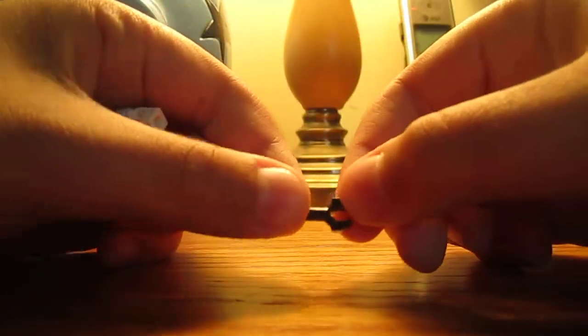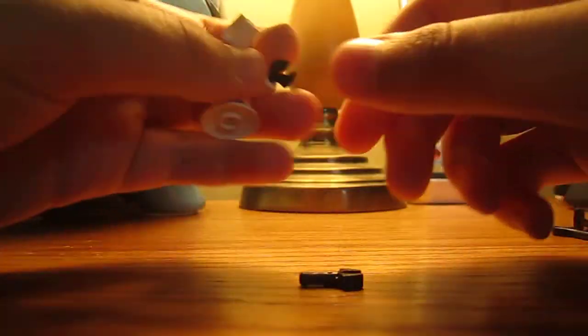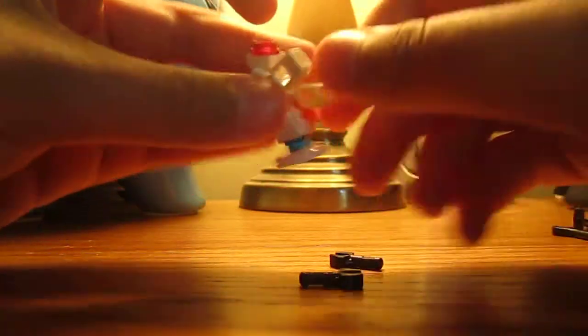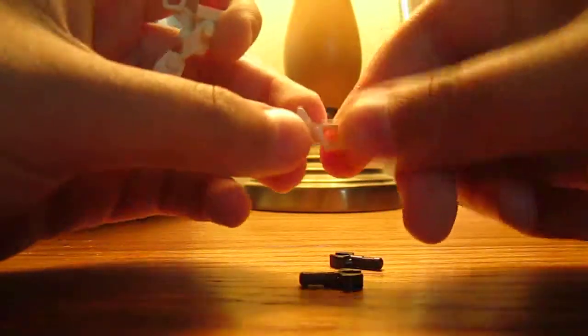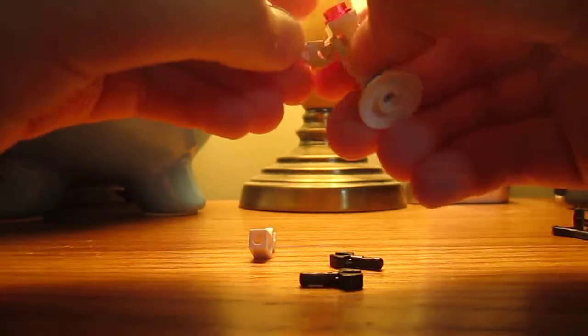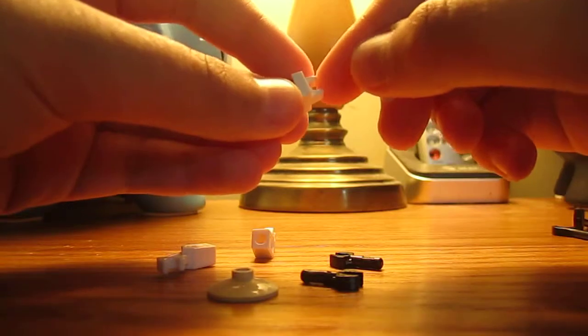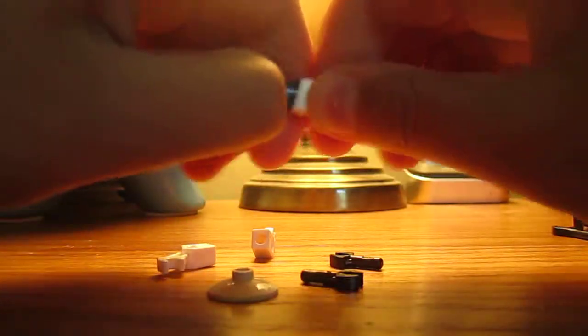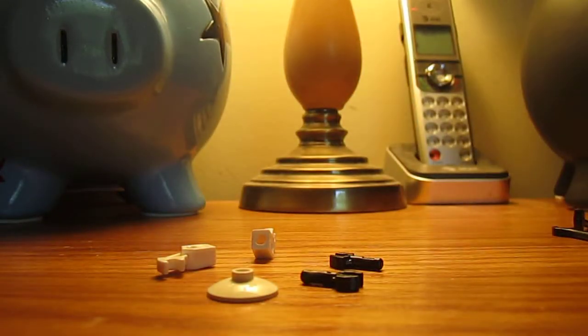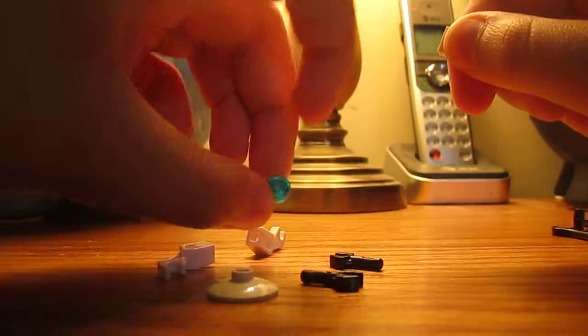Alright, so the pieces you'll need: you will need two of these black robot hands, two of these white robot arms, a white disc, a clip, and let me get this piece off. And a blue, clear blue stud.